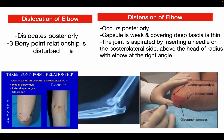Dislocation of the elbow joint occurs mostly posteriorly. When posterior dislocation takes place, the bony relationship between the medial epicondyle of the humerus, lateral epicondyle, and olecranon process is disturbed. Elbow joint effusion occurs mostly posteriorly, as the capsule is weak and the covering fascia is thin. The joint is aspirated by inserting a needle on the posterolateral side, above the head of the radius, with the elbow at a right angle.